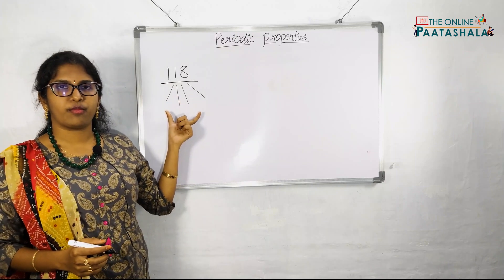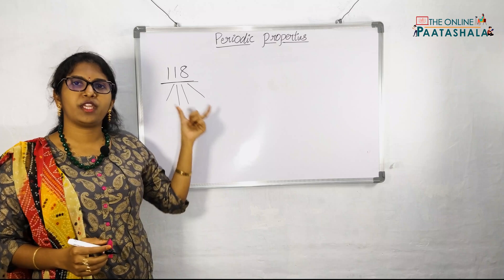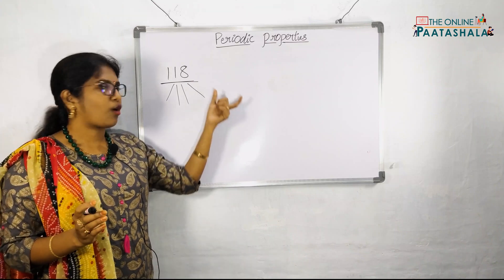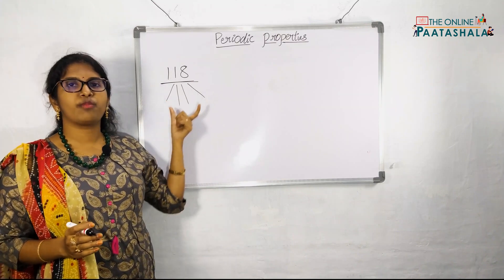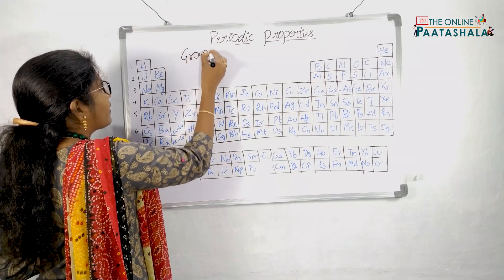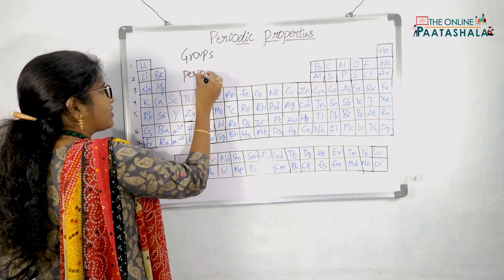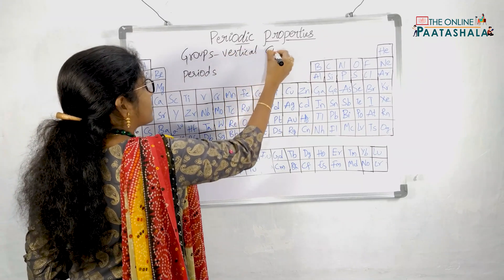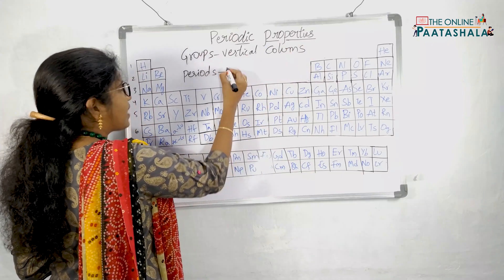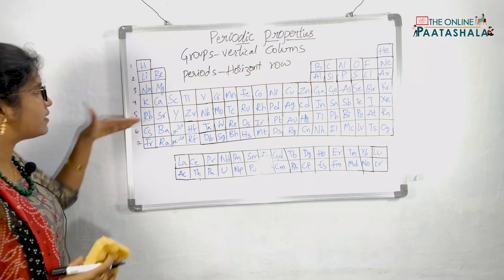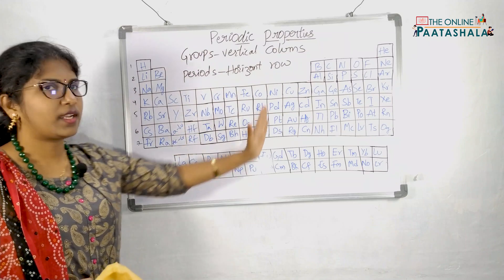Before learning periodic properties, you need to learn what is present in the periodic table and how we have differentiated these properties. In the periodic table, we have groups and periods. Groups are nothing but vertical columns, and periods are nothing but horizontal rows.